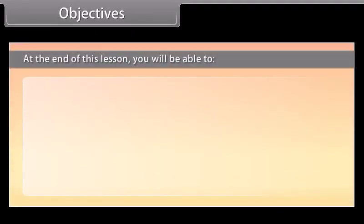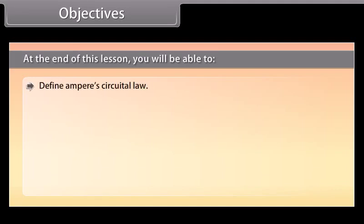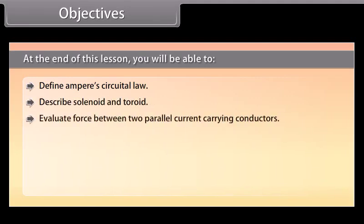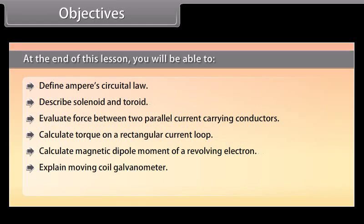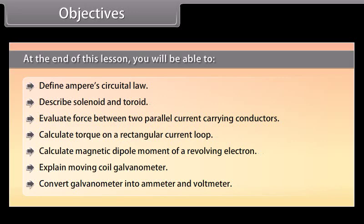At the end of this lesson, we'll be able to: define Ampere's Circuital Law; describe solenoid and toroid; evaluate force between two parallel current carrying conductors; calculate torque on a rectangular current loop; calculate magnetic dipole moment of a revolving electron; explain moving coil galvanometer; and convert galvanometer into ammeter and voltmeter.